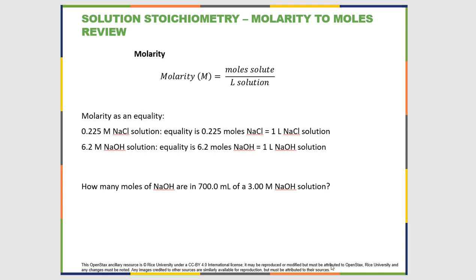In the previous examples we looked at stoichiometry involving masses of samples, converting from grams to moles to moles to grams. A couple of sections ago, before we started the stoichiometry examples, we looked at converting moles to grams and grams to moles. Here we're going to do two examples of solution stoichiometry, but first we want to look at the other thing we know how to convert to moles, which is molarity.